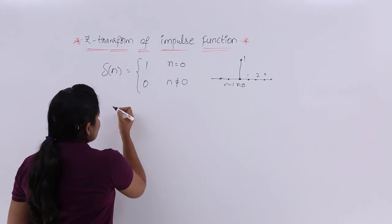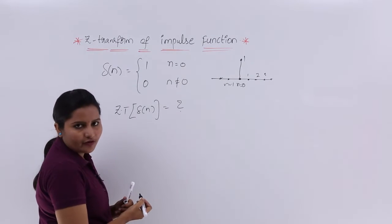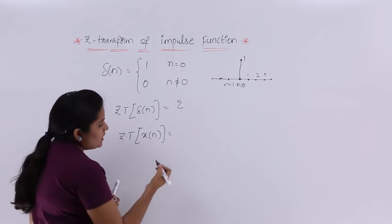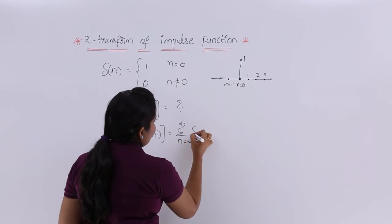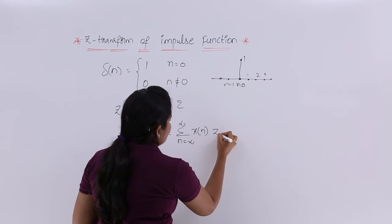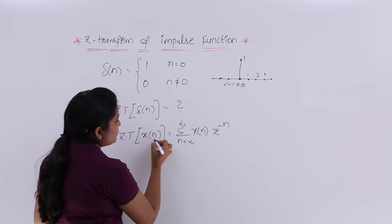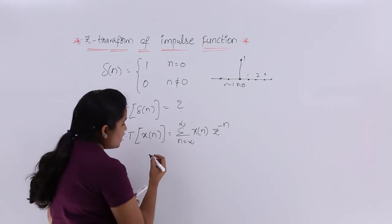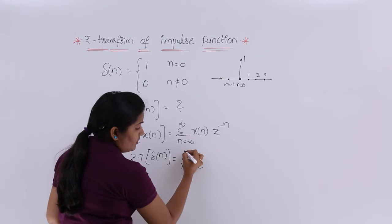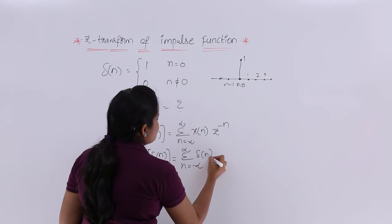Now we want to find the Z transform of δ(n). We know that the Z transform of any signal x(n) is defined as the summation from n = -∞ to ∞ of x(n) · z^(-n). Substituting δ(n) in place of x(n), the Z transform of δ(n) equals summation from n = -∞ to ∞ of δ(n) · z^(-n).